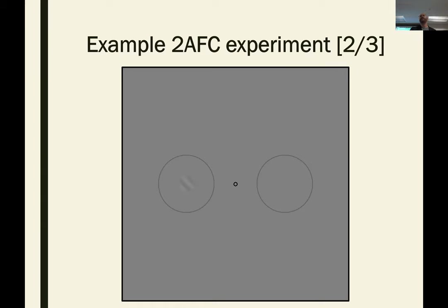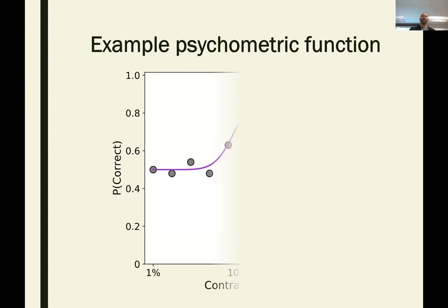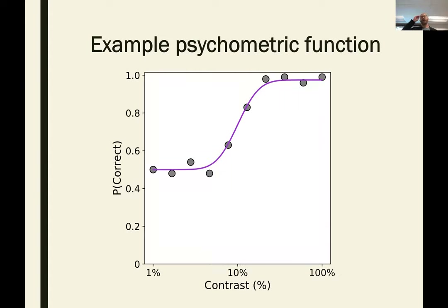When we do this kind of experiment, we measure the probability of somebody getting it correct — selecting the right side — as a function of the contrast. When the contrast is very low, they find it very difficult and are essentially guessing at 50%. When contrast is very high, they reach saturated maximum performance of around 100%. In between, they're somewhere between guessing and being able to do it. The important thing about visual performance is that it's stochastic.